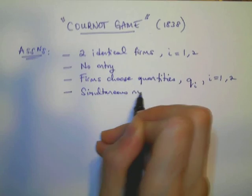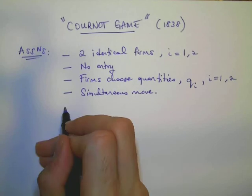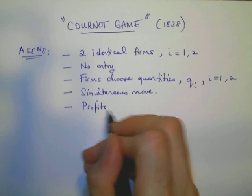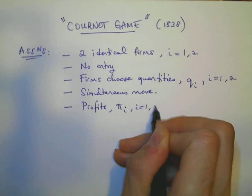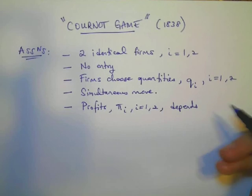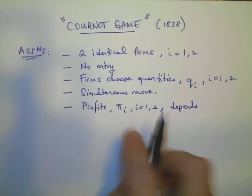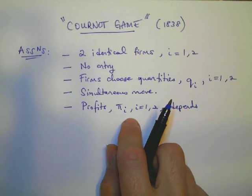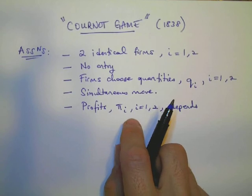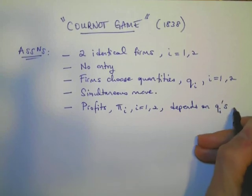And finally, it will turn out that the profits of these firms, let's call it πi, where I is either 1 or 2, depends on their respective choices of quantities. Not only respective, but both choices of quantities will be influential on both profits. Which makes sense, as we know that in oligopoly markets, your rival's choice affects your profits. So it depends on Qi's.